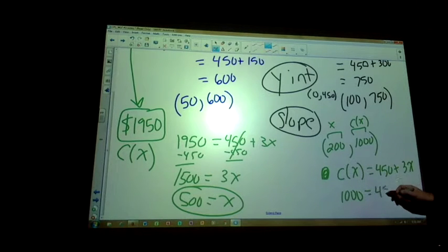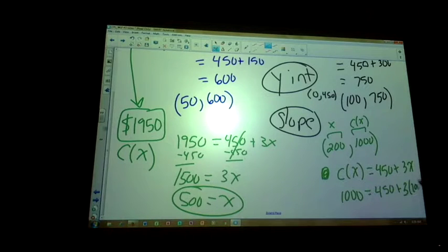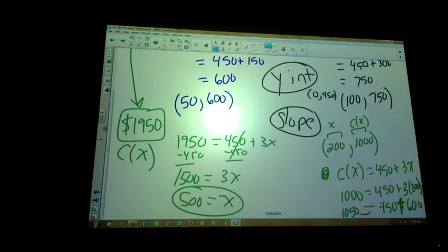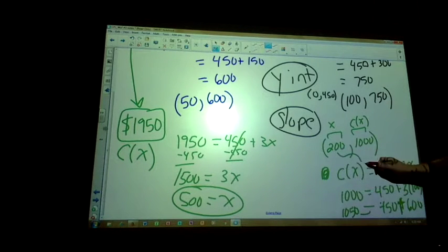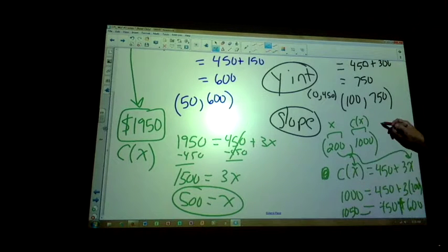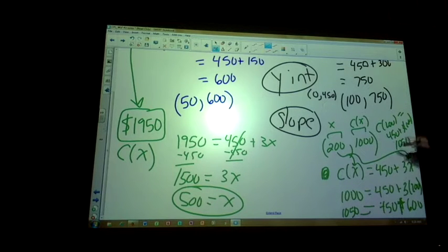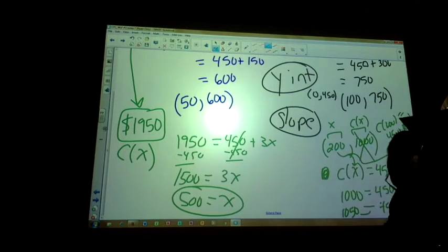Is 1,000 equal to 450 plus 3 times 200? 450 plus 600 is 1,050. Is the claim the employee made true? No. Can you just plug in the 200? Absolutely. You could have plugged 200 in here, which goes right here. C(200) = 450 + 3 times 200, which gives you 1,050, which means that claim was false.